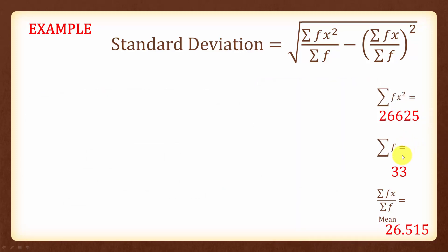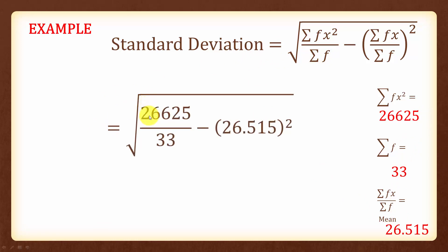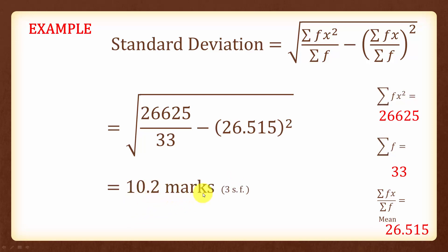We substitute these values into the formula: the square root of 26,625 over 33, minus the mean of 26.515 squared, which gives us 10.2 marks, rounded to three significant figures. For standard deviation, it is necessary to include the units as well.